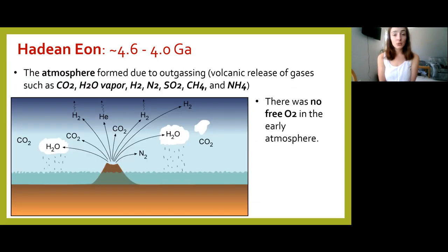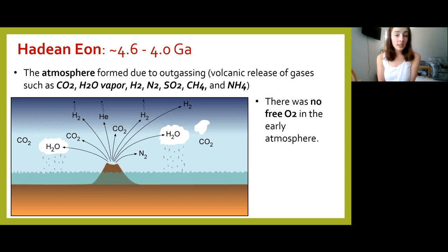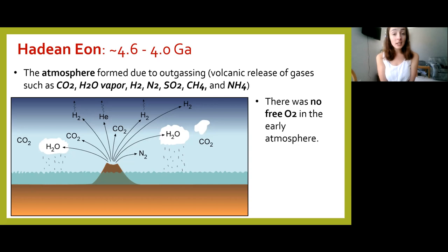During the Hadean, the atmosphere was formed by way of outgassing. Volcanoes were very active because Earth was very hot, and this activity released gases into the atmosphere including carbon dioxide, water vapor, hydrogen, nitrogen, sulfur dioxide, methane, and ammonium. These gases made up early Earth's atmosphere — and notably, there was no oxygen, or at least negligible oxygen. We'll get back to oxygen when we talk about the late Archean and Proterozoic.